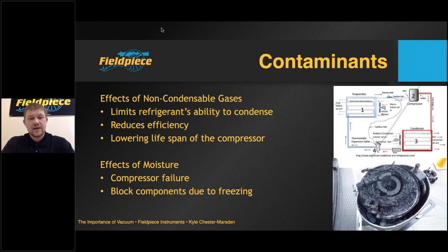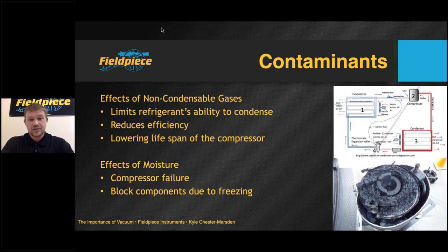Refrigerants transfer heat when they change phases — predominantly absorbing heat in the evaporator and releasing heat in the condenser. Non-condensable gases are the first issue. When you have non-condensable gases in a system, they simply take up space, which limits the refrigerant's ability to condense within the condenser. This reduces the efficiency of the system and forces the HVAC or refrigeration compressor to work harder, resulting in premature equipment failure. A big sign of non-condensable gases is abnormally high pressure on the high side — also referred to as high head pressure.